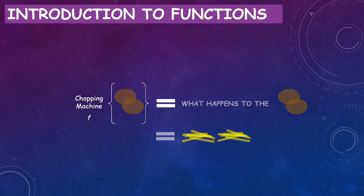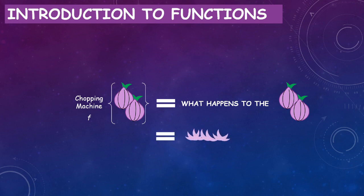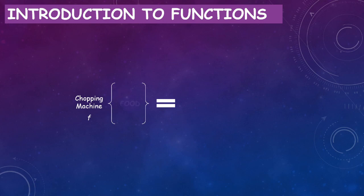If I change my input from potatoes to onions, my result would change as well. The result is what happens to the onions, which is chopped onions. In general, if I put in food into the chopping machine, the result would be what happens to the food, which is chopped food.